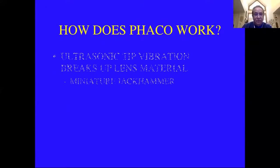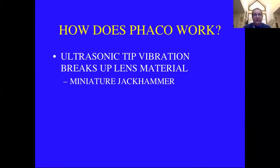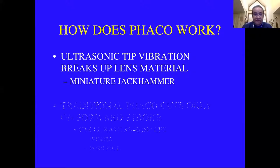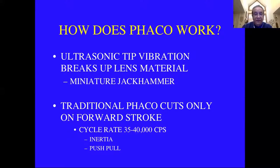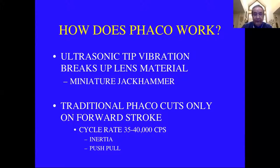How does phaco work? Basically, you have an ultrasonic tip which vibrates and breaks up lens material — it's like a miniature jackhammer. It moves forward and back very fast. You need a cycle rate of 35,000 to 40,000 cycles per second to overcome inertia. It only cuts on the forward stroke, then aspiration pulls the material back to the tip, and you get another forward stroke very rapidly, cutting into small pieces or emulsifying.